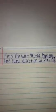Find the unit vector having the same direction as vector v equaling vector i minus 2 vector j.